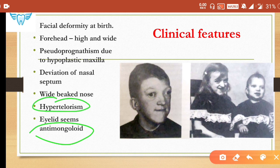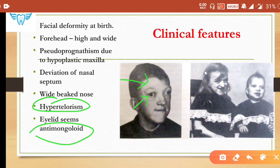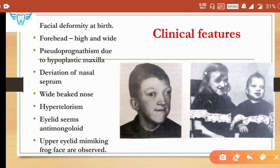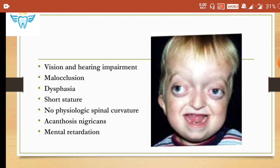The eyelids show an anti-mongoloid slant, where the lateral canthus is lower than the medial canthus — you can notice this in the pictures. This is called anti-mongoloid slant; the opposite is mongoloid slant. There is also an upper eyelid appearance mimicking frog face. Additional features include vision and hearing impairment, malocclusion, dysphasia (speech defect), and short stature with no physiologic spinal curvature.